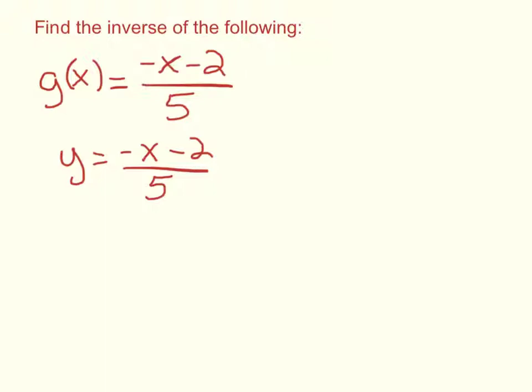Now the important part here is that we're going to switch this x and y, we're going to switch the two. So let's do that now. x equals negative y, we'll just do the y in a different color, just so you can see which part I'm changing there, minus 2 all over 5.